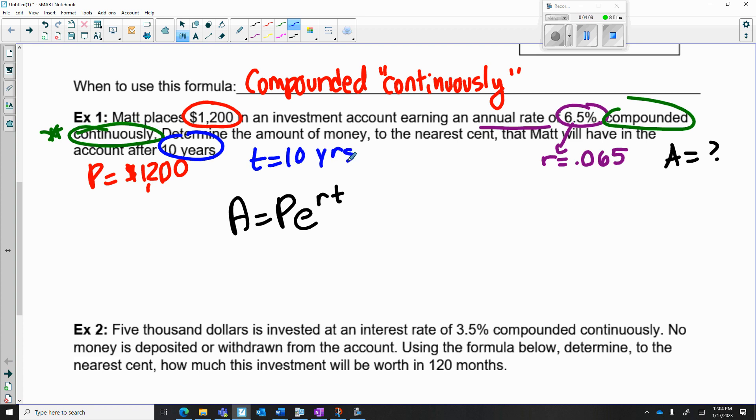Let's just plug in what we know. The initial amount, the principal, was $1200. The e we're just going to leave as e because we know it's an irrational number. The r is the rate, so that's 0.065, and the t is the time, that's going to be 10. So I'll put times 10 here, and then we're done. We just have to put it right in the calculator and see what we get.